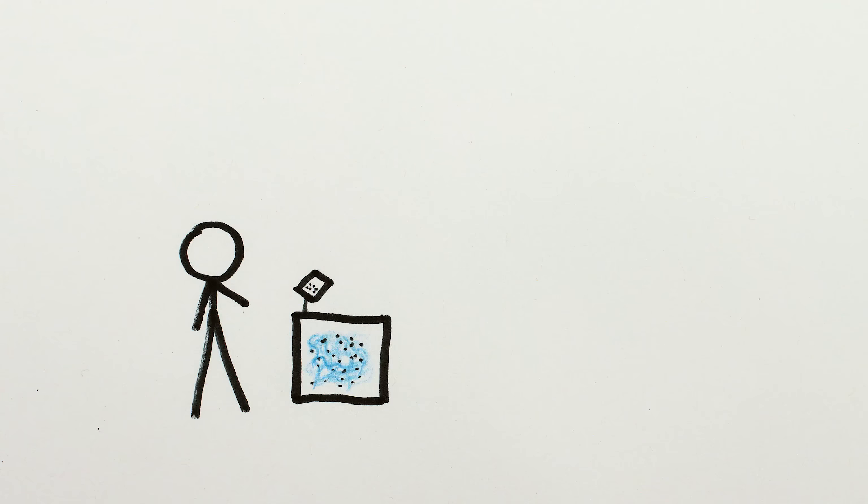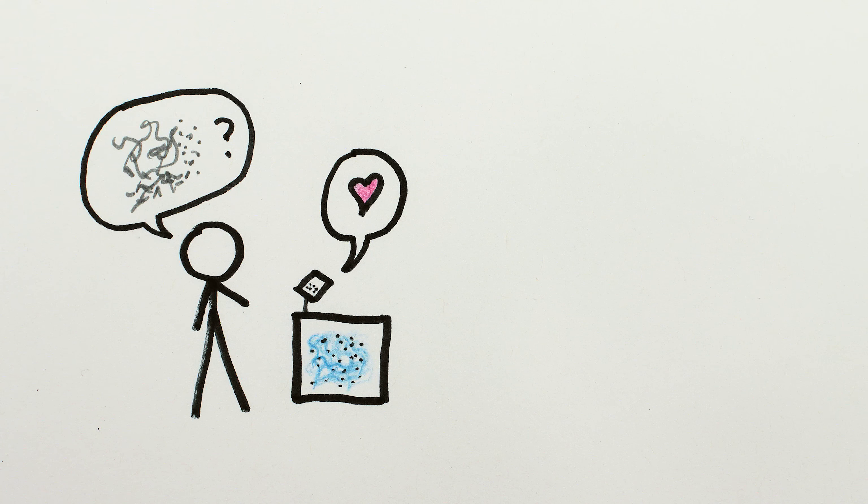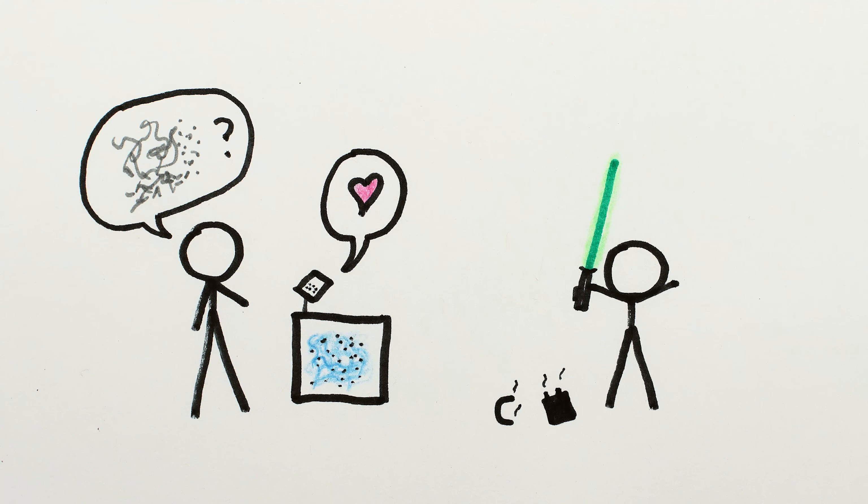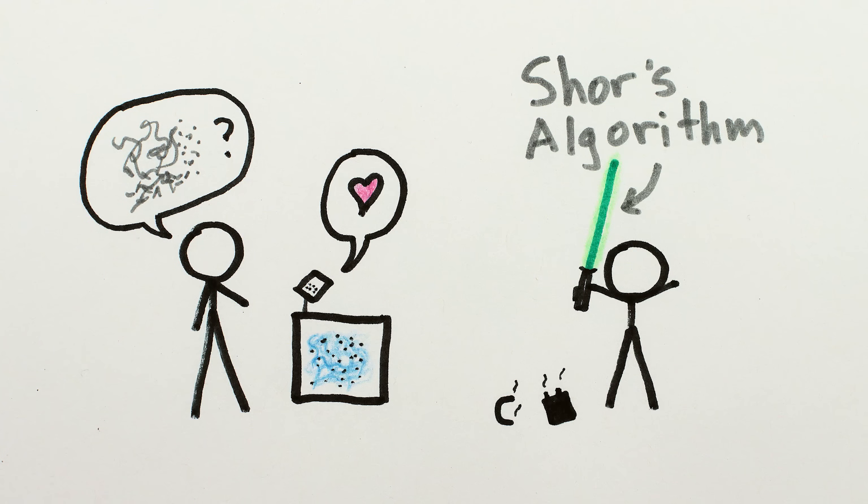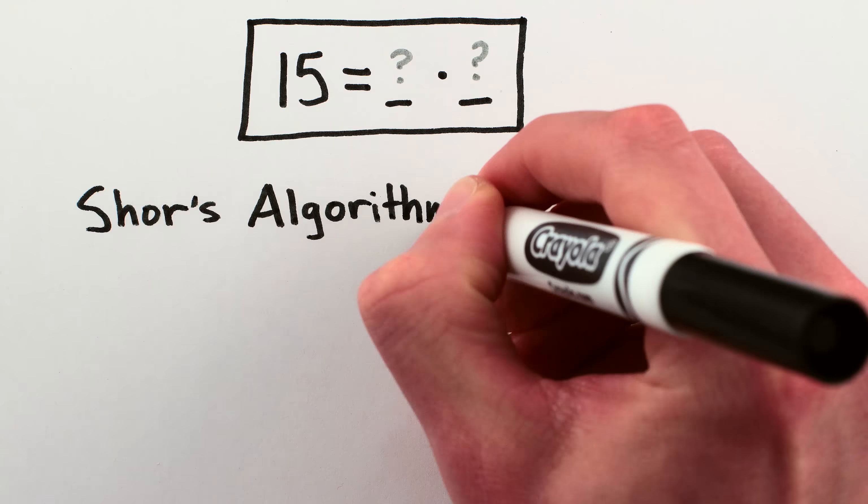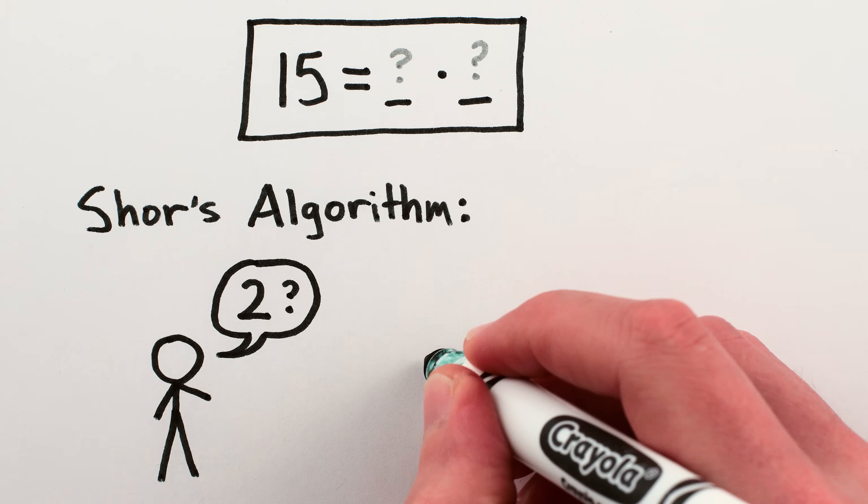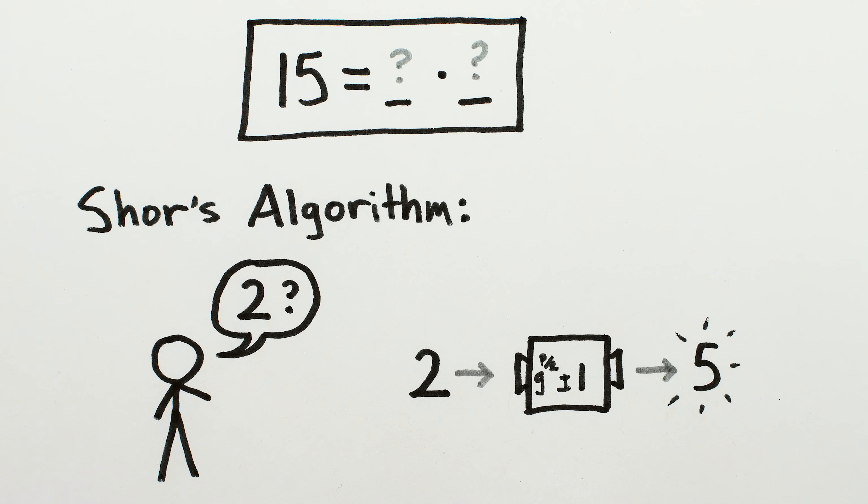But quantum computation has the potential to make it super, super easy to access encrypted data. Like having a lightsaber you can use to cut through any lock or barrier, no matter how strong. Shor's algorithm is that lightsaber. Roughly speaking, to factor a given number, Shor's algorithm starts with a crappy guess that might share a factor with your target number, but which probably doesn't. And then the algorithm transforms it into a much better guess that probably does share a factor.